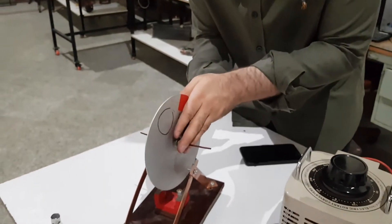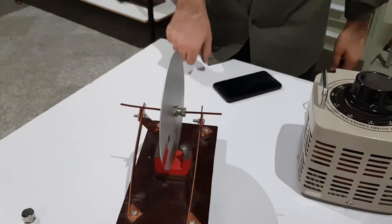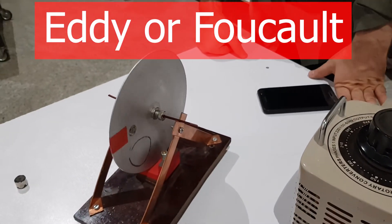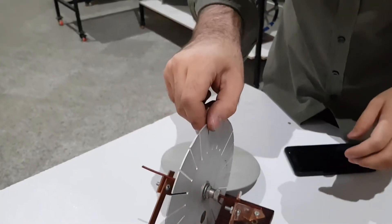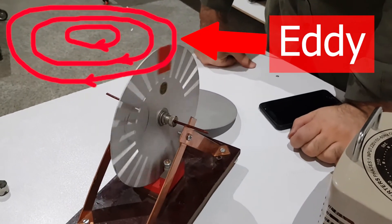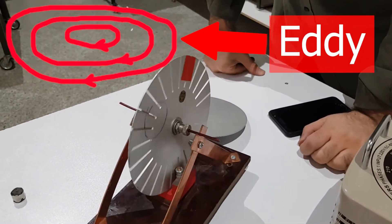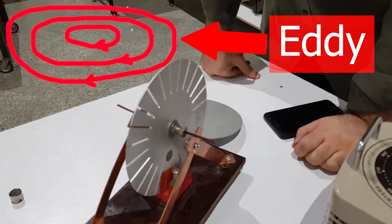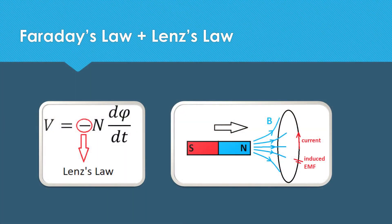Hello and welcome to ElectroRefy channel. In this video we want to talk about eddy or focal current. Eddy current is a kind of current in conductors which is produced by a changing magnetic field. Actually it's based on Faraday's law of induction and also Lenz's law.